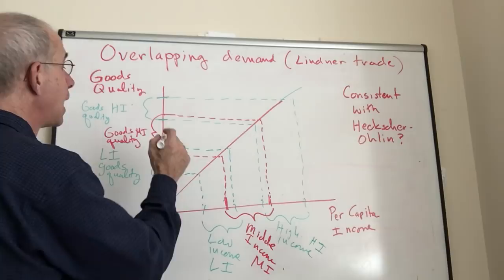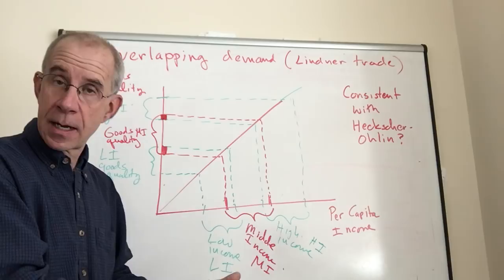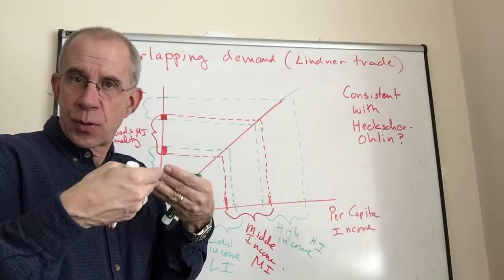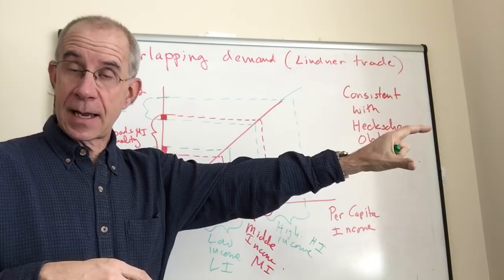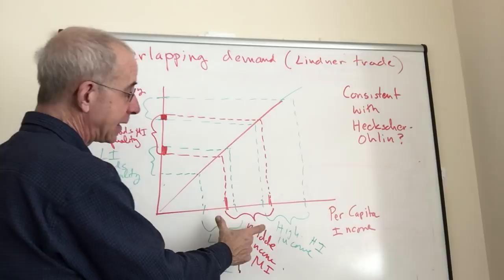There's also a range of products that are produced and consumed in both the middle income country and the high income country. So it's the overlapping demand, the production of goods for consumers that might exist in the other country with similar range of per capita income that gives the possibility of trade.